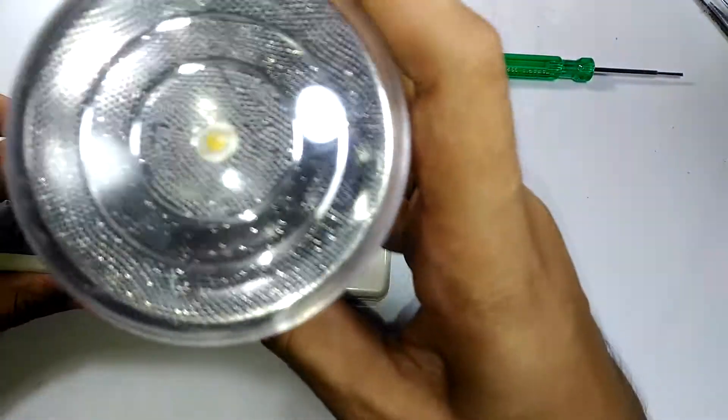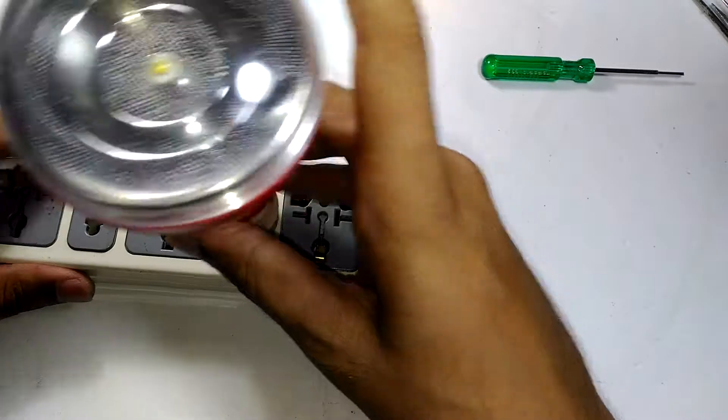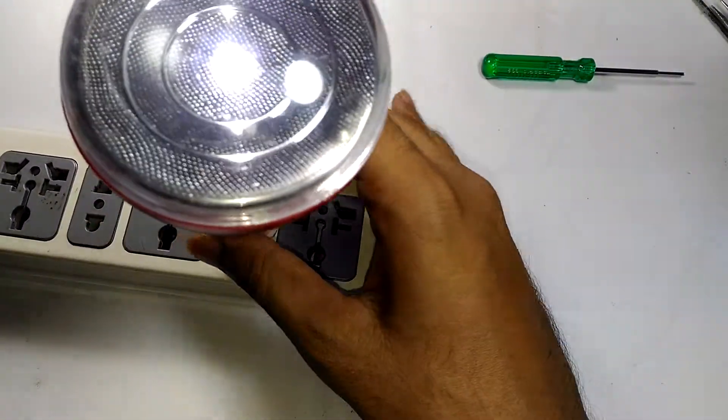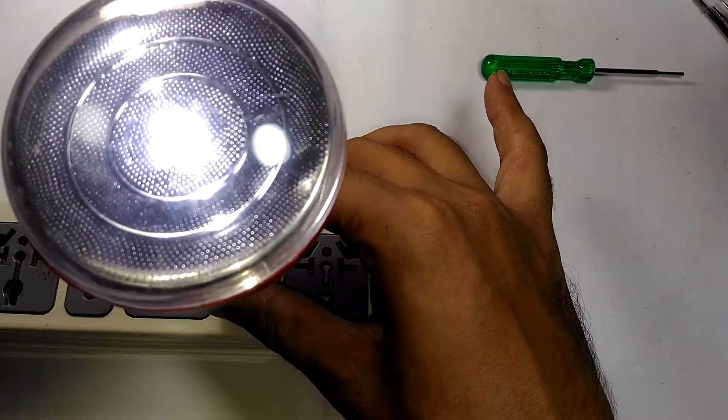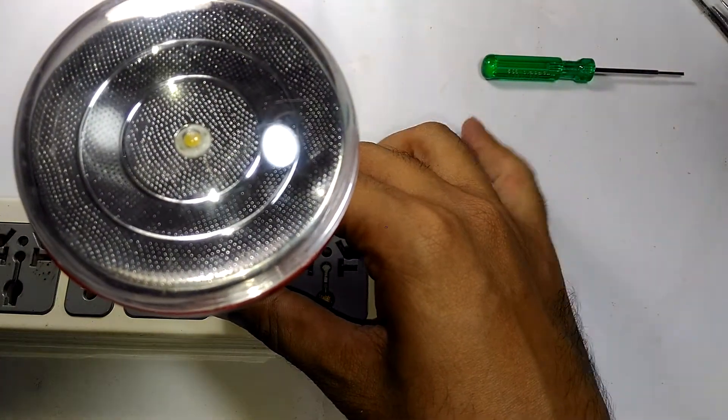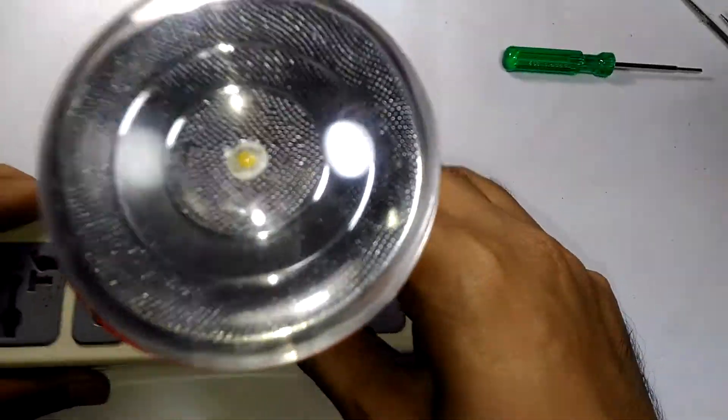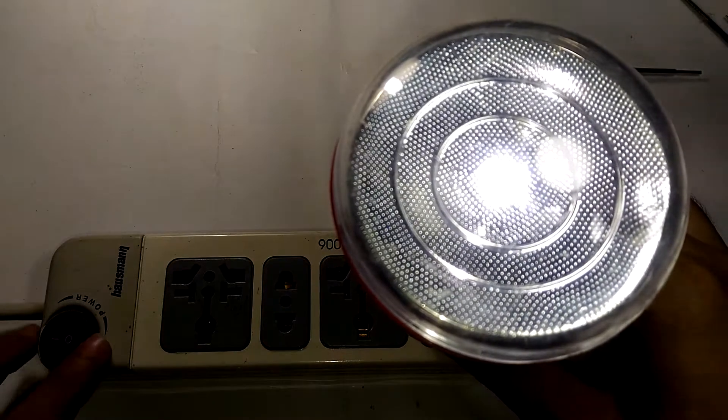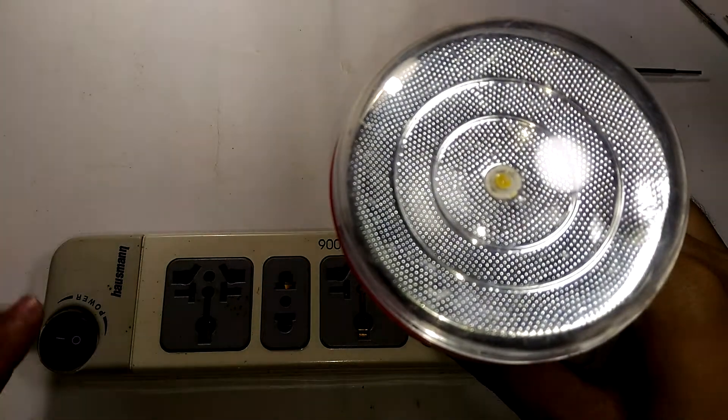With the switch to the left side, this acts as a regular bulb. If I turn the power on, this will light up. Turn the power off, it just turns off. That is the first mode.